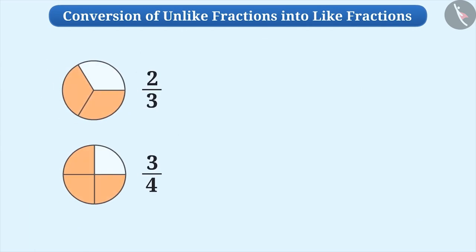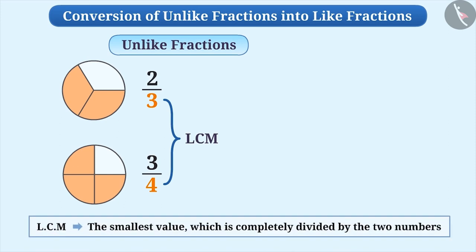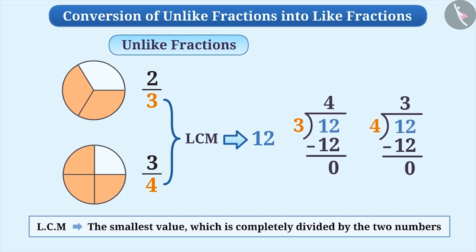Look here, there are two fractions 2 by 3 and 3 by 4. These are unlike fractions because they have different denominators. To convert them into like fractions, first we calculate the LCM of the denominators of both fractions. The LCM of two numbers is the smallest value which is completely divided by the two numbers.